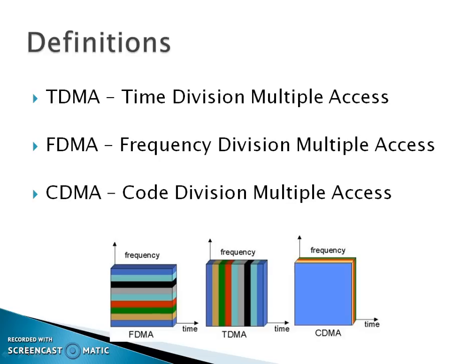Taking the definitions: TDMA is Time Division Multiple Access, FDMA is Frequency Division Multiple Access, and CDMA is Code Division Multiple Access. A diagram is shown below, which we will use to clarify further.